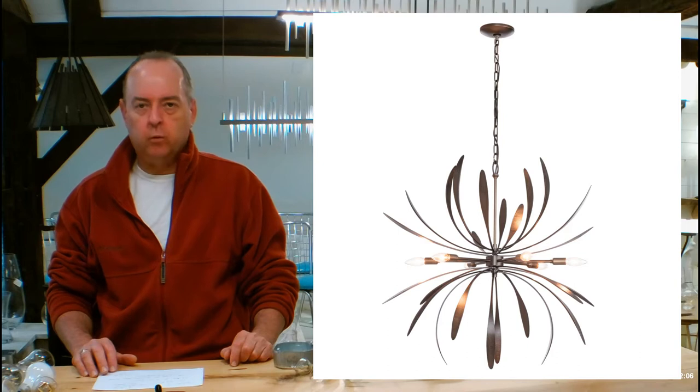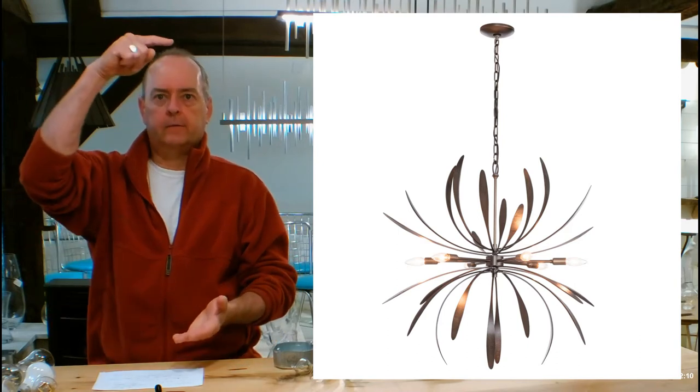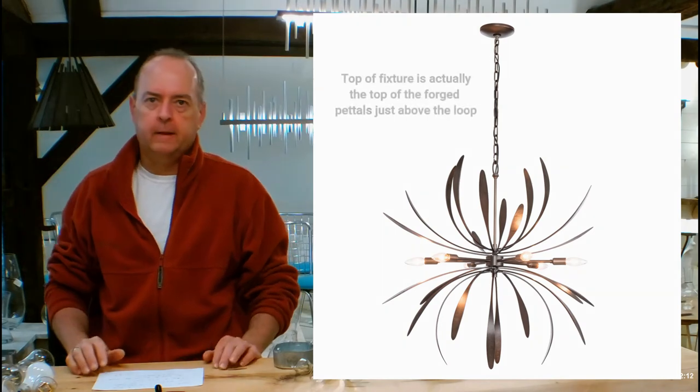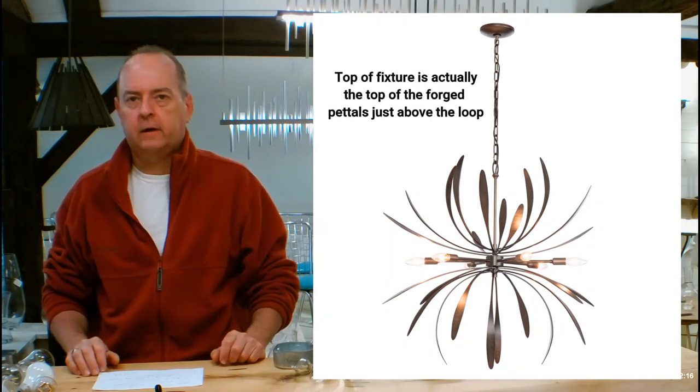This is going to be 28.20 inches high, and that's going to be the distance from the bottom of the fixture to the top of the fixture. There's going to be a loop on the top and that's where the chain starts from there going up 32.7 inches in diameter.